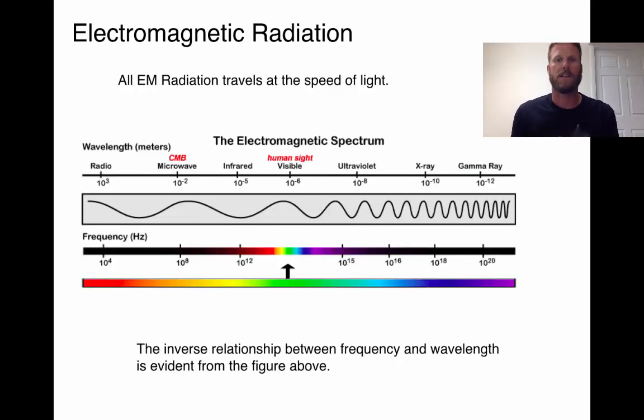The diagram here depicts the electromagnetic spectrum and all the different types of radiation. It is important to point out that all of these types of radiation travel at the speed of light, which is 3.0 x 10 to the 8th meters per second.